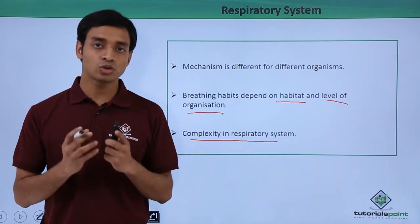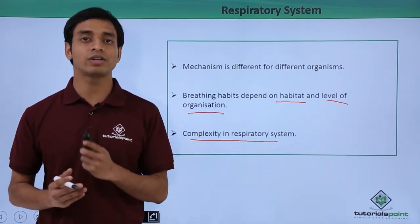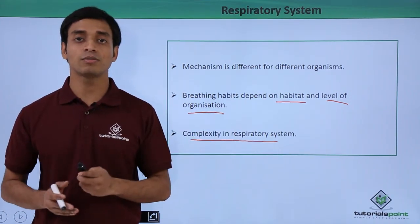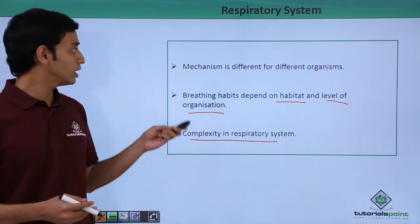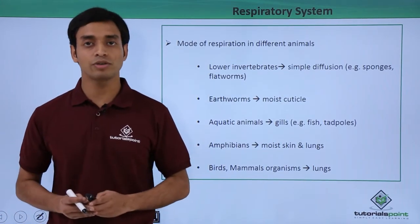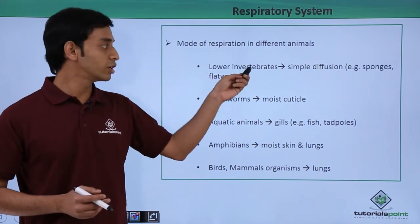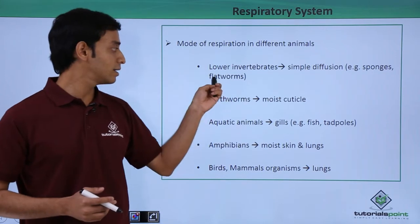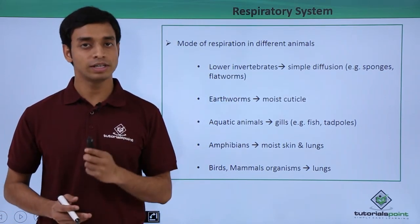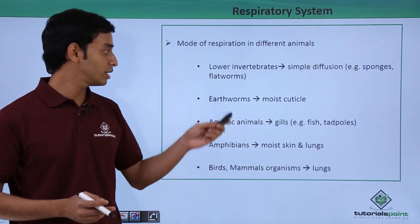In case of complex organisms like human beings, these organisms have very well-developed respiratory systems and respiratory organs. Based on the complexity of the organism, the respiratory system also varies. Now, looking at the mode of respiration in common types of organisms: lower invertebrates, for example sponges and flatworms, perform respiration by the simple process of diffusion, dependent on the concentration gradient.